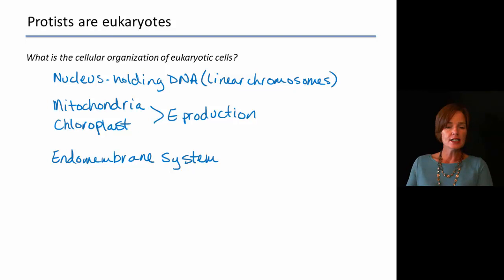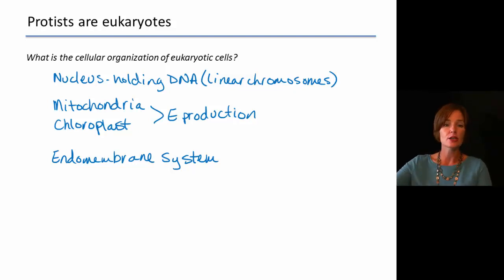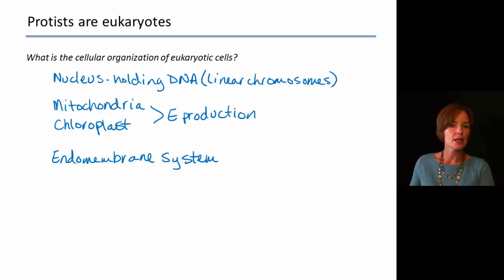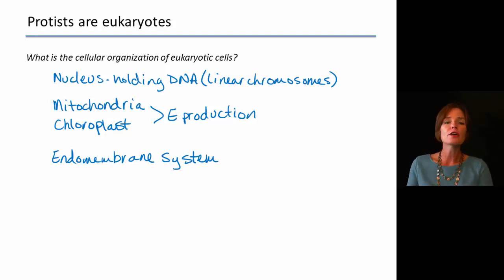Besides these, we would have generic cellular components such as ribosomes, the cytoskeleton, the plasma membrane, and cytoplasm. All of those things will be present in these eukaryotic cells.